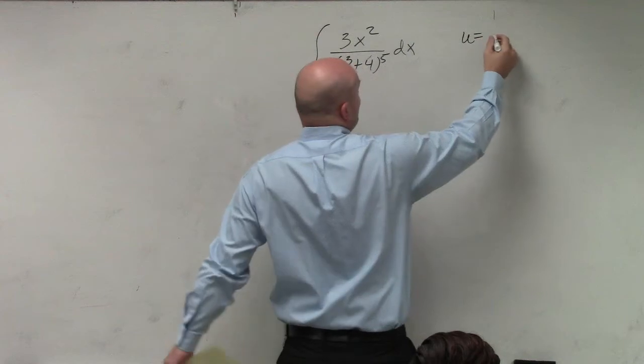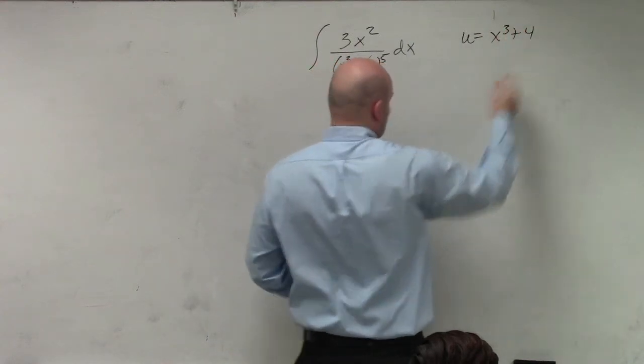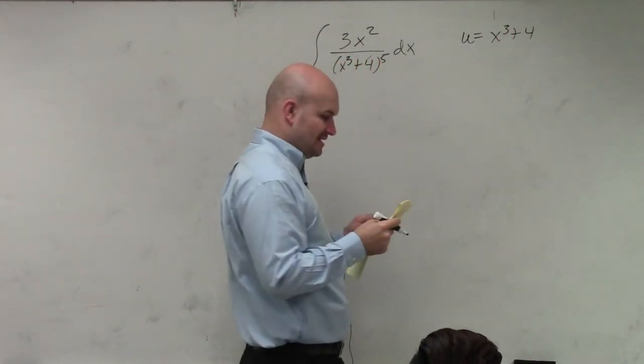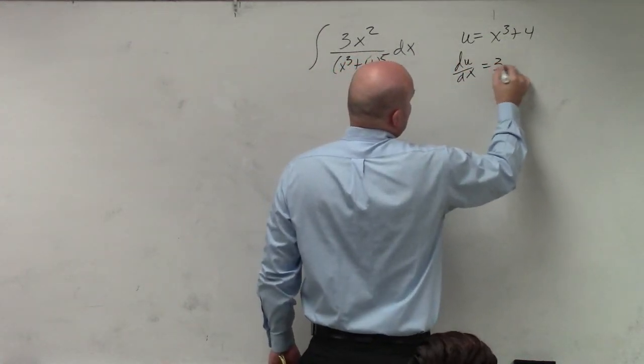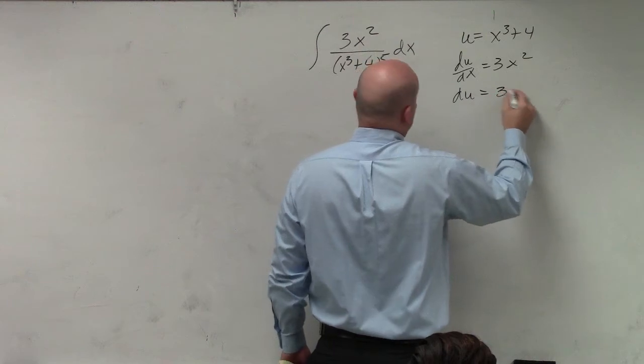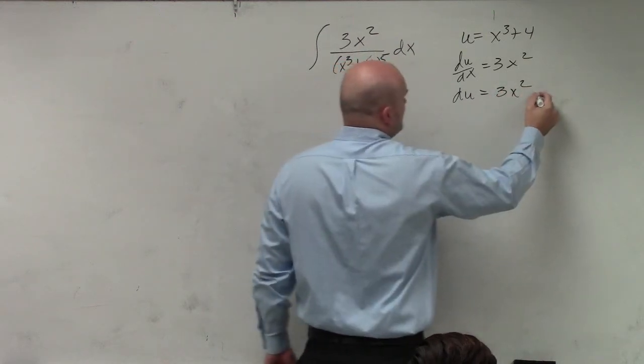I can at least recognize that my u is x cubed plus 4. Let's just make sure I wrote that down correctly. In this case, I did. So therefore, my du dx is 3x squared. So du is equal to 3x squared dx.